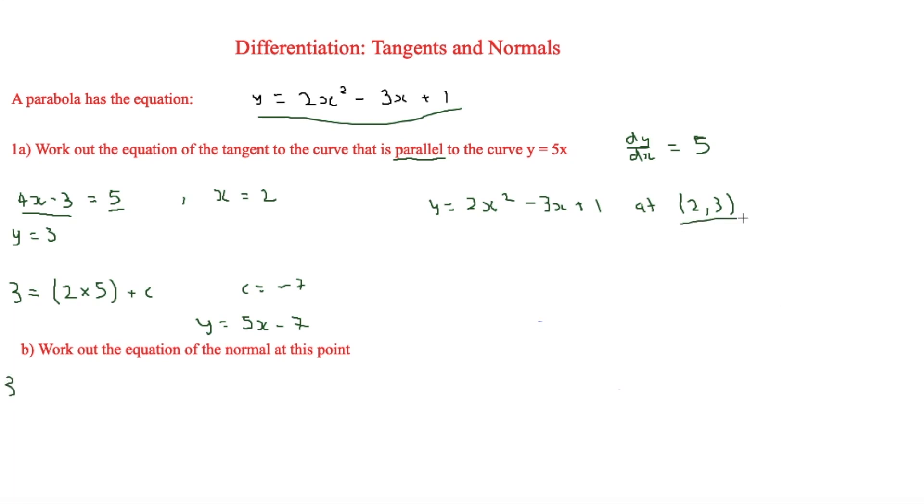And then we're going to start subbing these points back in, which we worked out. So these are the points here, (2, 3). So it's going to be 3 equals 2 - and then the x, because you get the minus 1 over 5 times x - and then x we know is 2, so times that by 2, and then that's plus c.